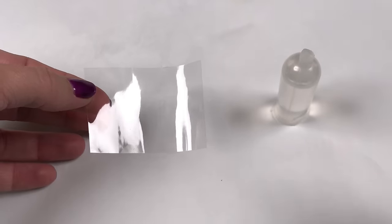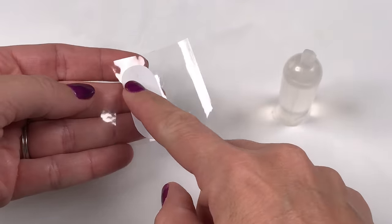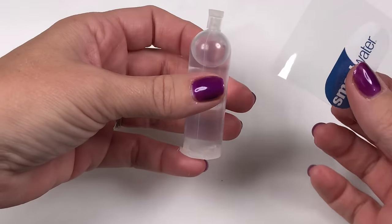Take a piece of clear packaging tape, place the label upside down on it, and then wrap it around the bottle.